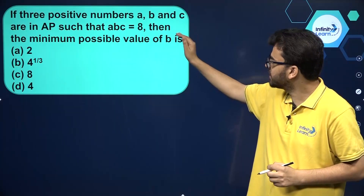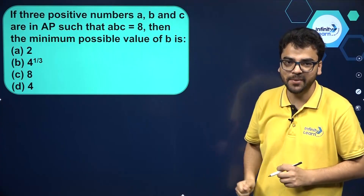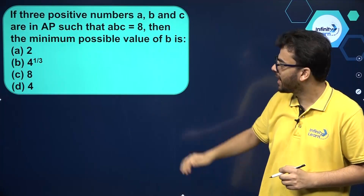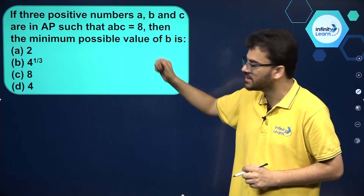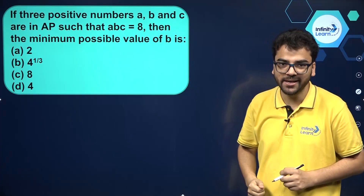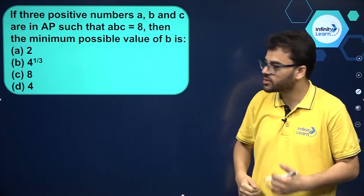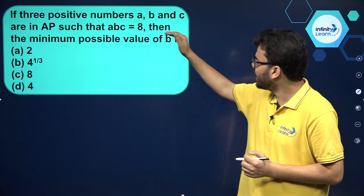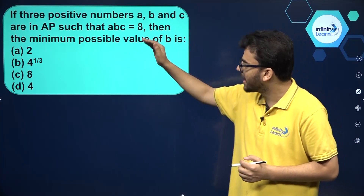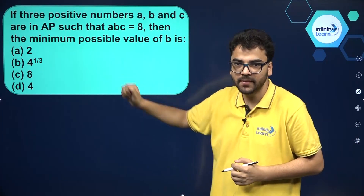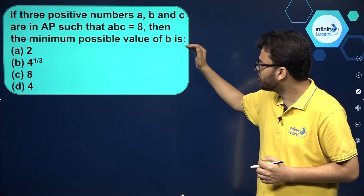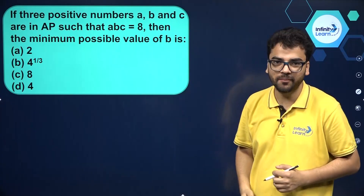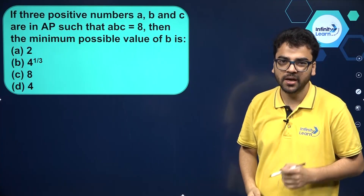We have a question in which we have three positive numbers A, B and C. It is given that A times B times C is equal to 8, and A, B and C are in AP. We have to find the minimum possible value of B.